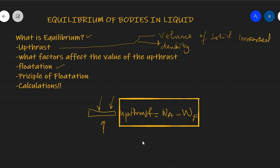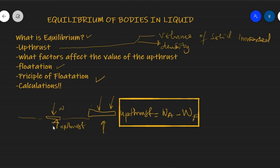Flotation takes place when the uptrust is equal to the weight. Let's assume this is a body in a body of water. The weight of the body acts downwards; the uptrust acts upwards. When the uptrust equals the weight, the body is set to float. For a cork, when the weight is less than or equal to the uptrust, it floats. When the weight of something like a stone is more and its surface area is smaller, it will sink.